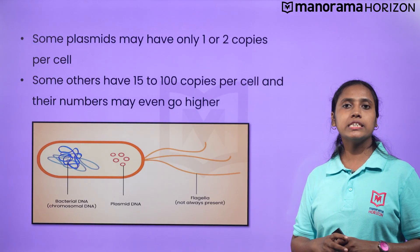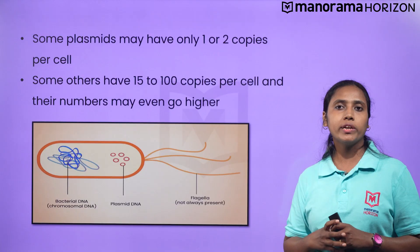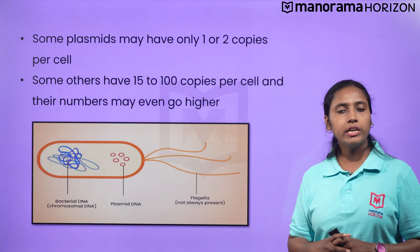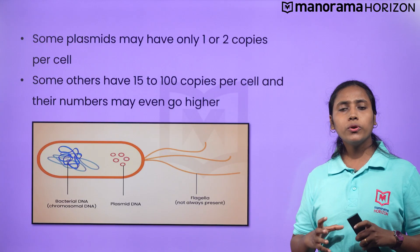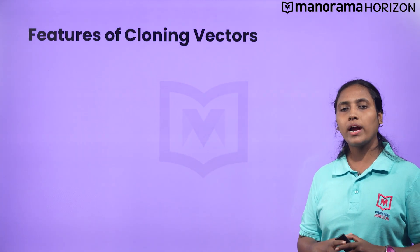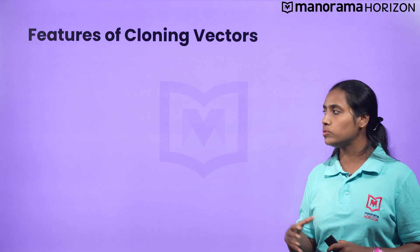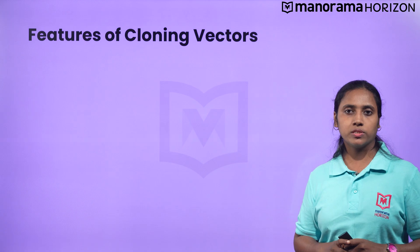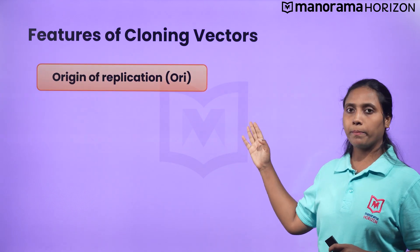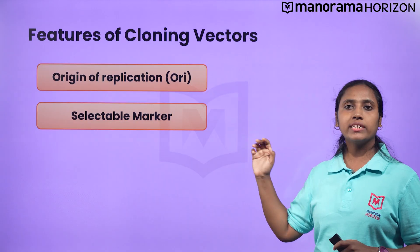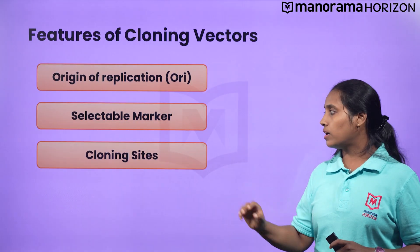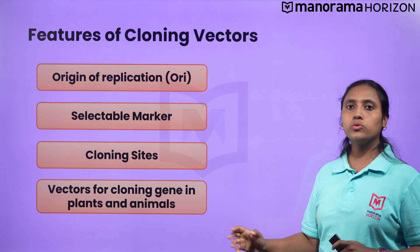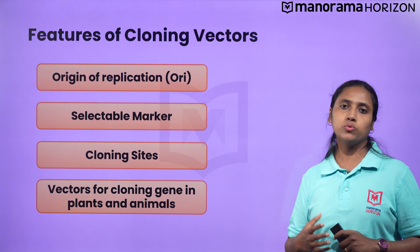Vectors used at present can help easily link foreign DNA and select recombinants from non-recombinants. There are four features required to facilitate cloning into a vector: origin of replication, presence of a selectable marker, a cloning site, and a vector to transfer genes into the host.